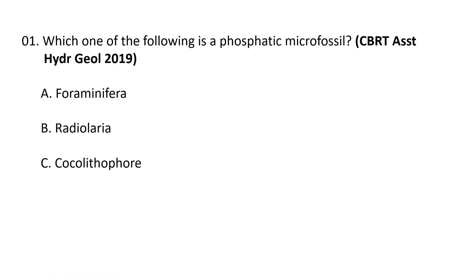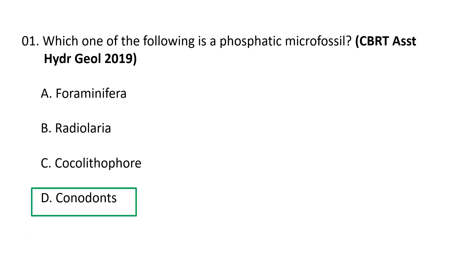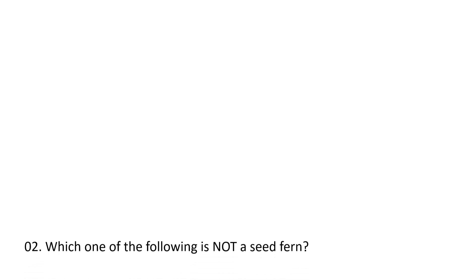Choices are: A) Foraminifera, B) Radiolaria, C) Coccolithophore, and D) Conodonts. Conodonts is a phosphatic microfossil. These are composed of crystallites of calcium phosphate or apatite, embedded in an organic matrix. These microfossils are made of hydroxyapatite, a phosphatic mineral. The conodont elements can be extracted from rock using adequate solvents. So conodonts are an example of a phosphatic microfossil.